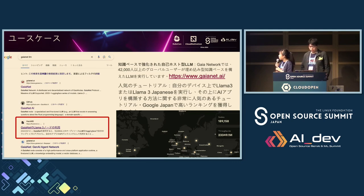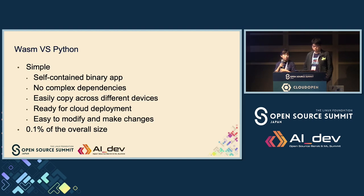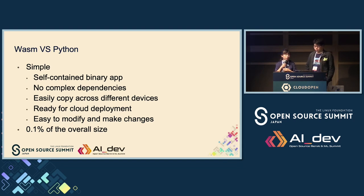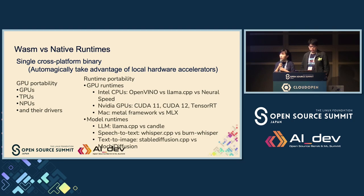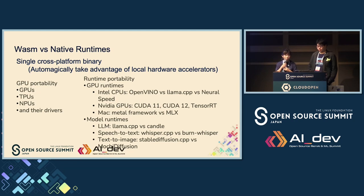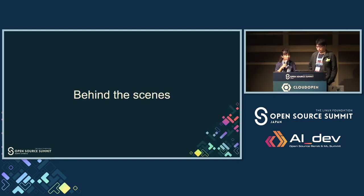The throughput refers to the tokens being transferred. With WebAssembly, it's self-contained, very easily copied across different devices, and easy to modify. Compared with native, it also has other advantages. It's designed to be agnostic to the underlying runtime, so you can swap out Llama.cpp for a different large language model runtime — such as Apple's MLX runtime — without changing or even recompiling the application.